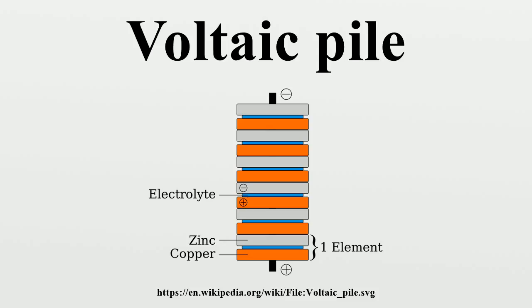When no current is drawn from the pile, each cell, consisting of zinc, electrolyte, and copper, generates 0.76 V with the brine electrolyte. The voltages from the cells in the pile add, so the six cells in the diagram above generate 4.56 V of electromotive force.